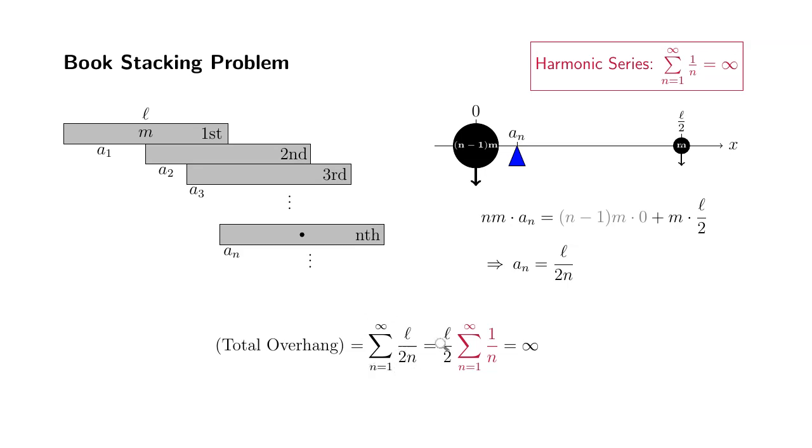Since L over 2 is just a constant, which has nothing to do with n, we can kick it out of the summation. So you have L over 2 times the remaining summation is exactly the same thing as the harmonic series. So this is going to be divergent. So any positive number times infinity is going to be infinity, which means that the total overhang can be made as big as we wish by using more books.